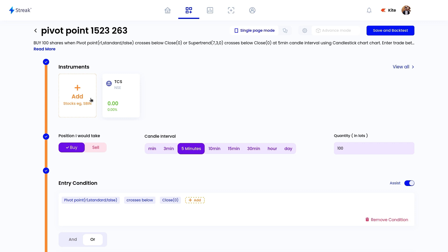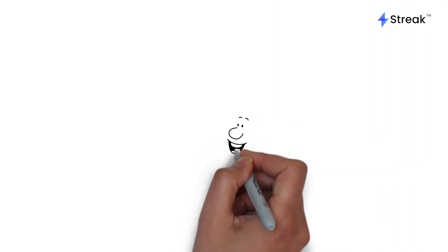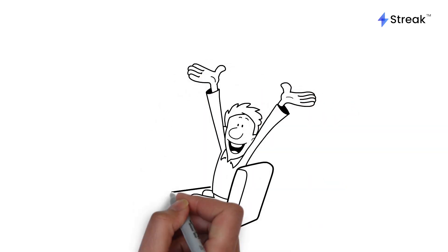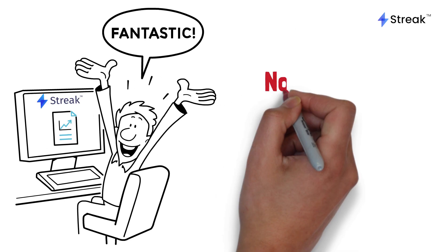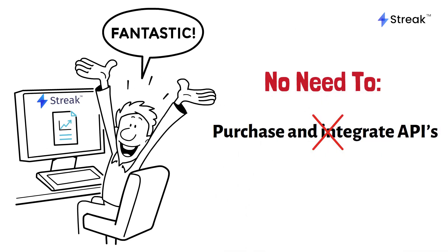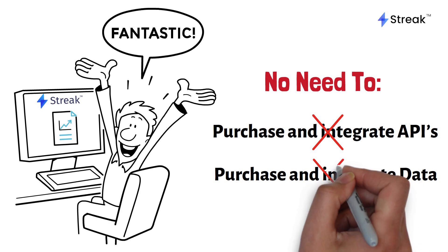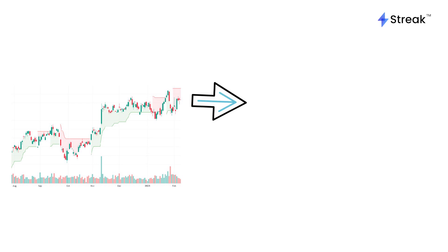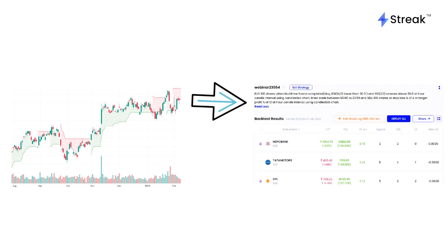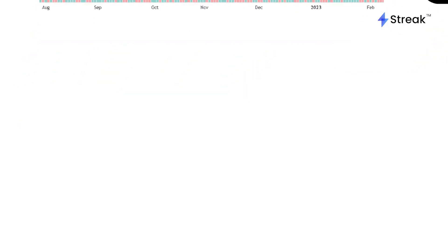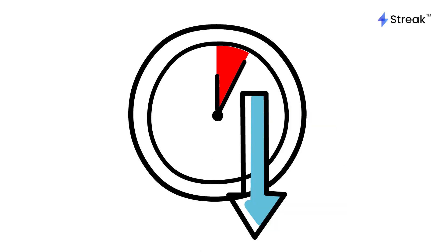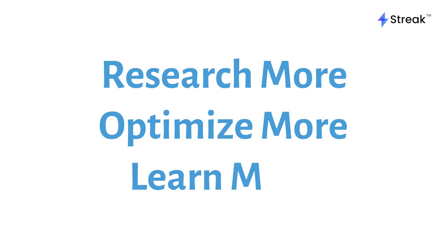This feature is also available on the mobile app. We have empowered retail traders by enabling them to backtest their trading strategies without the need to purchase and integrate APIs, purchase and integrate data, learn coding, or hire a programmer. And with the revolutionary chart to backtest feature, we have even eliminated the need to manually feed in conditions. Because of this, the time required to develop and deploy a strategy has been reduced significantly, allowing you to research more, optimize more, and learn more.